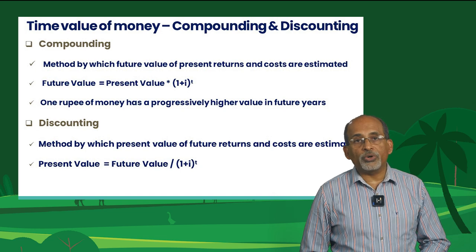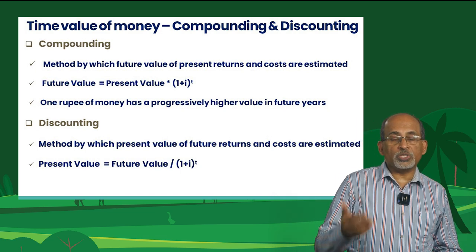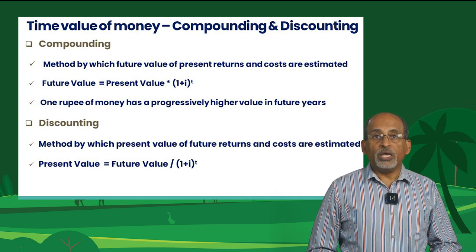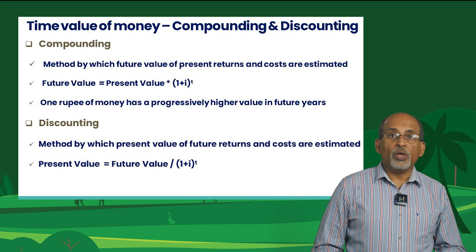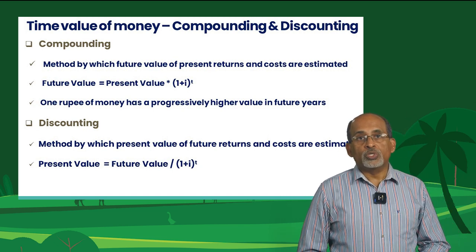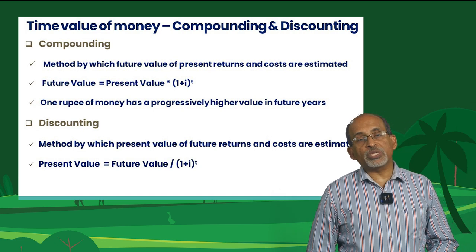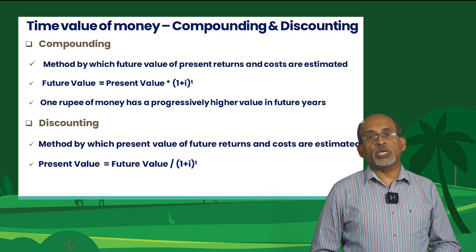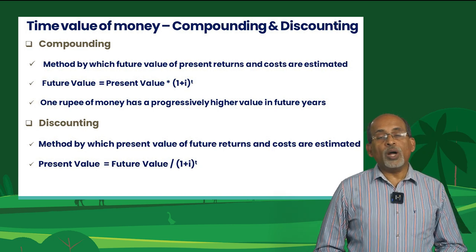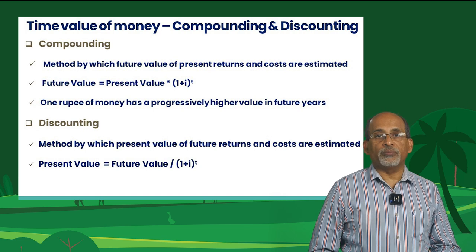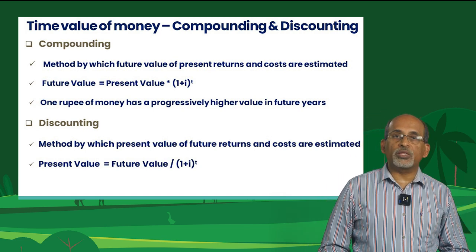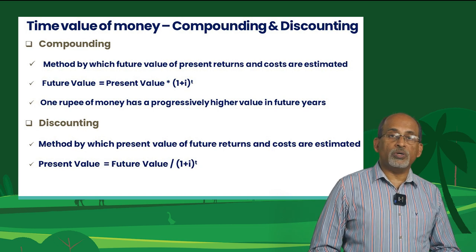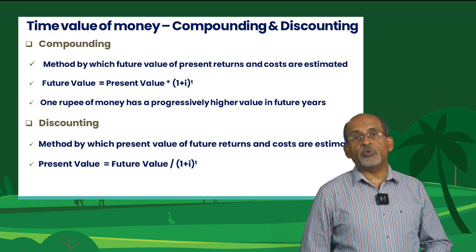Discounting is the opposite of compounding. It means 1 rupee payment made in period 1 in the future exchanges for 1/(1 + i) rupees now. Discounting is the process of finding the present value of a future cash flow. Present value equals future value divided by (1 + i) raised to n. The quantity 1/(1 + i)^n is called the discounting factor. When we consider the time value of money, we are taking into account the effects of time and interest rate on present and future cash flows.